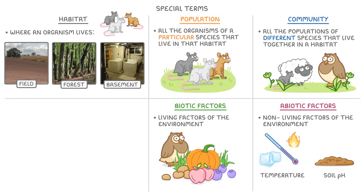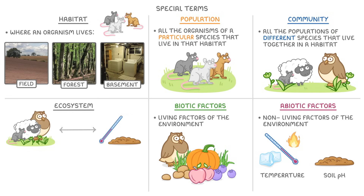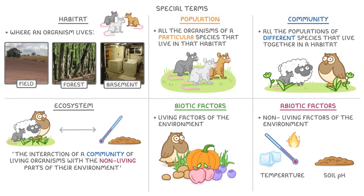If we put all of these together — so the habitat, the community that lives there, and all of the biotic and abiotic factors — what we have overall is the ecosystem, which we could describe as the interaction of a community of living organisms with the non-living parts of their environment.